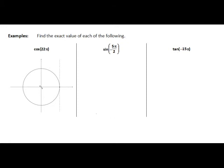Remembering that our angles are always measured from the positive x axis in an anti-clockwise direction. So we know we're at 0 radians here at the positive x axis. If we rotate 180 degrees or pi radians around to the negative x axis, we will be at pi.